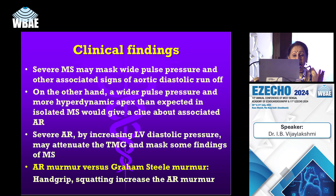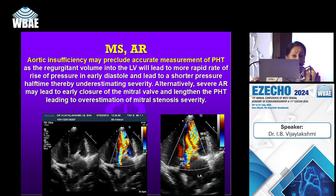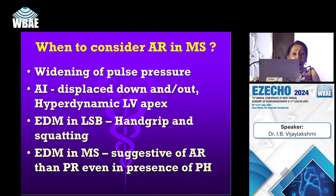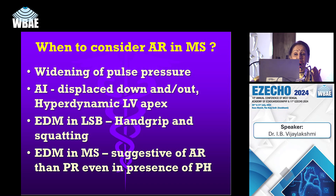Mild mitral regurgitation is defined by a vena contracta less than 3 mm; 3–6 mm is moderate; more than 7 mm is severe. Importantly, if there is an eccentric jet with reflux into the pulmonary veins, it is severe even if vena contracta or eyeballing suggests otherwise.